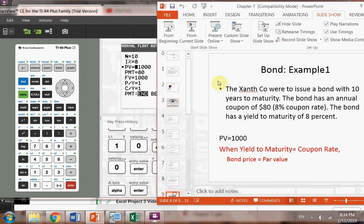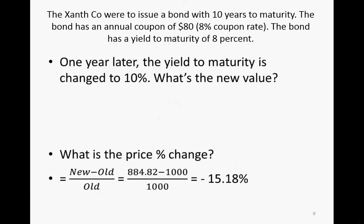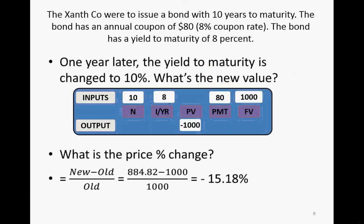For the next exercise: one year later, the yield to maturity has changed to 10%. That changes the bond value. You use a different interest rate — 10 instead of 8 — and the time to maturity has shrunk from 10 years to 9 years since one year has passed. Change I from 8 to 10 and N from 10 to 9. The payment and future value stay the same. You get a new present value of negative $884.